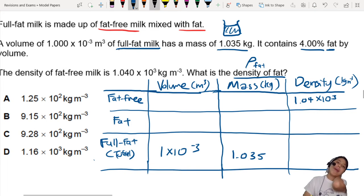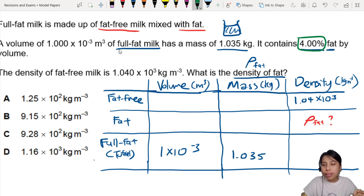There we go. Let's do calculations. There's too many unknowns. We are trying to find the density of fat right here. But we don't know anything. Never mind. We slowly step by step. So the first thing we know is 4% fat. Means that will be 96% fat-free.